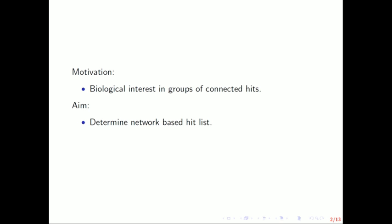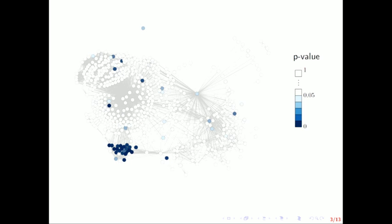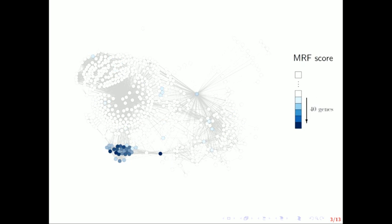The aim is to determine a network-based hit list. Let's go from something like this to something like this. Now all of these genes here are some kind of shade of blue, they're in our hit list. You can think of this as kind of like a smoothing of the scores in the network.